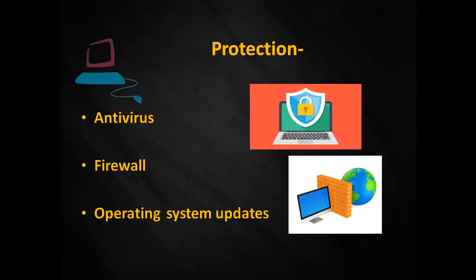You can see in this picture: here is your computer, here is the internet, and there is a protection barrier between them — symbolically shown to represent protection against viruses. I hope you understood these topics. The first threat that comes through the internet is the virus, and types of viruses include trojans and worms, each with different functions. The protections are: install antivirus software, keep the firewall setting on, and update the operating system. Here we have covered the first point — virus, trojans, and worms. Let's move on to the next topic.